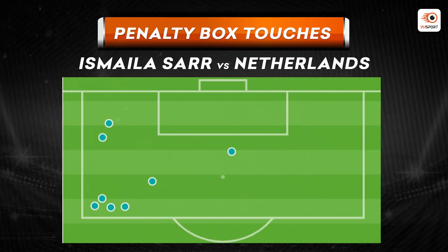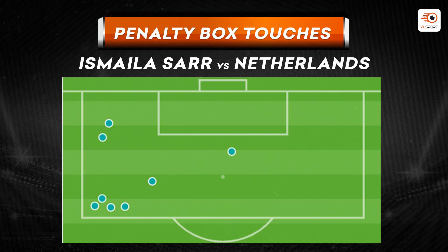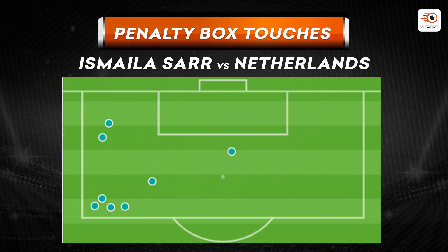Ab chaliye ek interesting graph dekhte hai denoting the penalty box touches. Jaise ki aap dekh sakte hai — Sarr versus Netherlands — yeh unke penalty box touches hai. He had a very high number of touches, which is eight. Aap yeh graphic mein dekh sakte hai kitne threatening positions liye unhoney — one shot from the center of the box and a lot of touches on the left hand side inside the box. Yeh kaafi promising positions hai aur yeh aapko goals ya assists mein involve ho sakte hai.